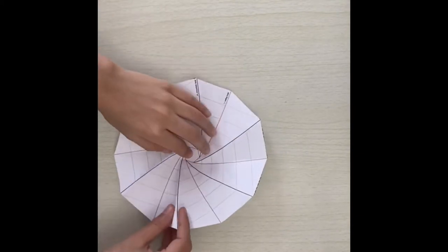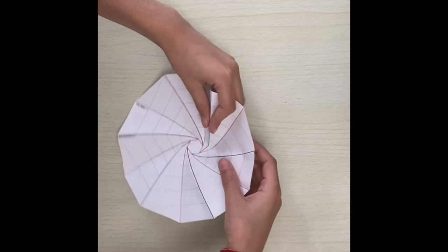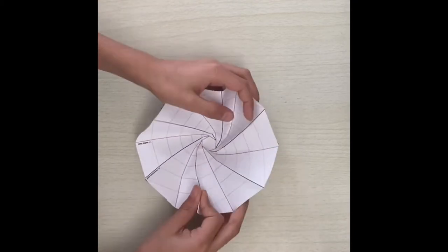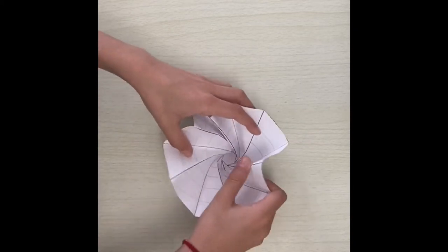Once you've got all these folds done, you want to just collect all of them, just like this. Just collect them, start forming a spiral.